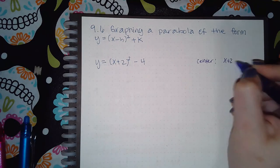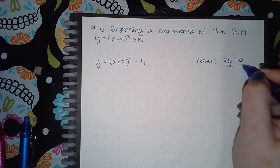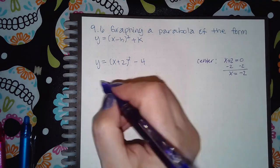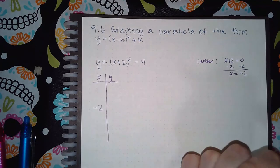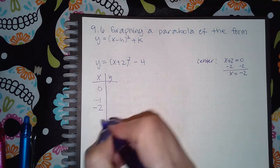I'm going to take x plus 2 and equal it to 0. I get x equal to negative 2 as my center. When I make the chart, I'm going to make sure I put negative 2 here and then plug two values to the left and two values to the right.